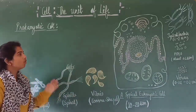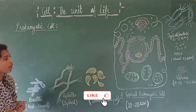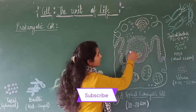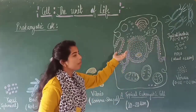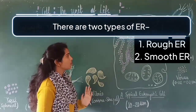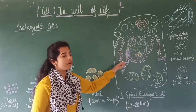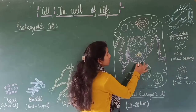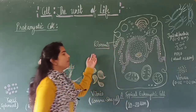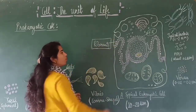Both prokaryotic and eukaryotic cells have one common organelle which is known as ribosomes. Ribosomes are present near the nucleus. On the rough endoplasmic reticulum, dot-like structures present on its surface are known as ribosomes. Ribosomes are present in both eukaryotic as well as prokaryotic cells. The main function of the ribosome is synthesis of protein.